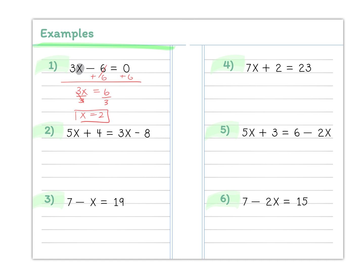When you have variables on both sides, move them to one side. Subtract 3x from the right and from the left to get 2x plus 4 equals negative 8. Subtract 4 from both sides — whatever you do to the left, you do to the right to keep it balanced. That gives 2x equals negative 12. Divide both sides by 2 to get x equals negative 6. Plugging negative 6 back in gives negative 26 on both sides.